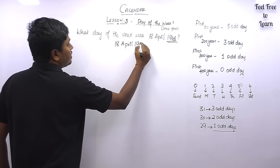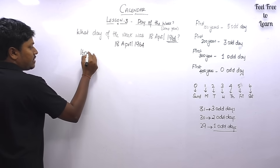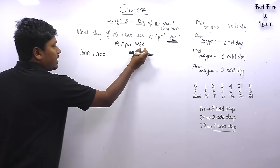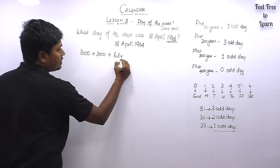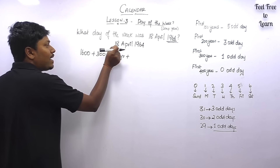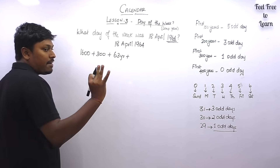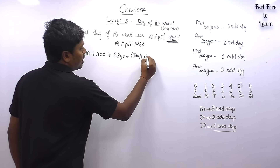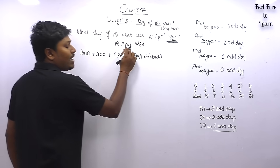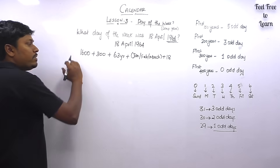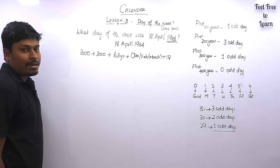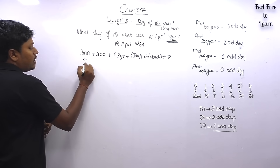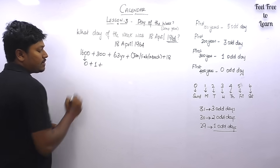For 1964 we write 1600 years, then 300 more years totaling 1900, with 64 remaining. We take 63 years first, then the 64th year to find 18th April. Before April we have 3 months: January, February, and March. For 1600 years: 0 odd days. For 300 years: 1 odd day. For 63 years, divide by 4: we get 15 leap years and 48 ordinary years.